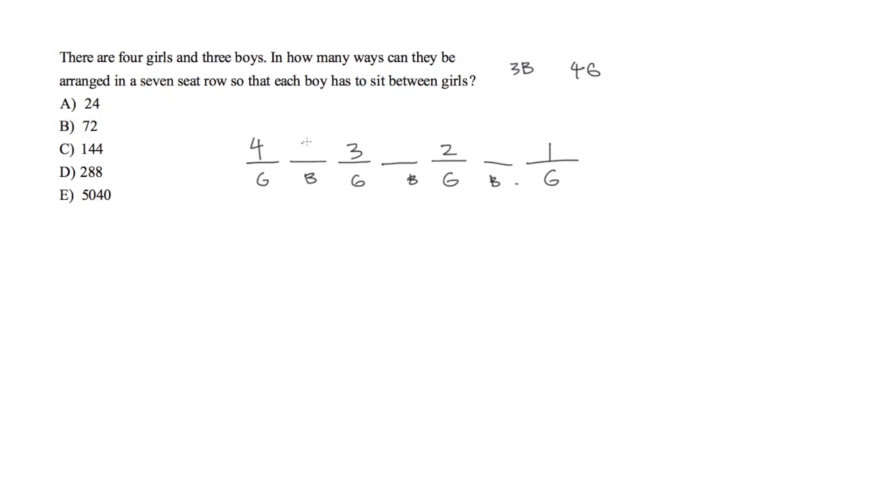Now we can do the same thing for the guys as well. We have three boys. We have three options for that first seat. All three guys can sit there. Here, since one guy is sitting there, now we only have two choices left. And again, there's going to be one boy remaining, and he has to sit there on the sixth slot.